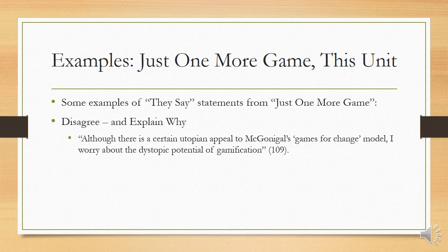That makes this a great they say statement — incorporating someone else's research but giving a new perspective. He's saying, hey, McGonigal's got a good point, but have you thought about this? And that's exactly what we're supposed to do with synthesis. He's got his own view of the potential dangers of stupid games, and by quoting this other research, he's able to show the significance of his statement. He's not just agreeing with McGonigal — he's using McGonigal to show why his idea is also important, adding something to this already existing conversation.